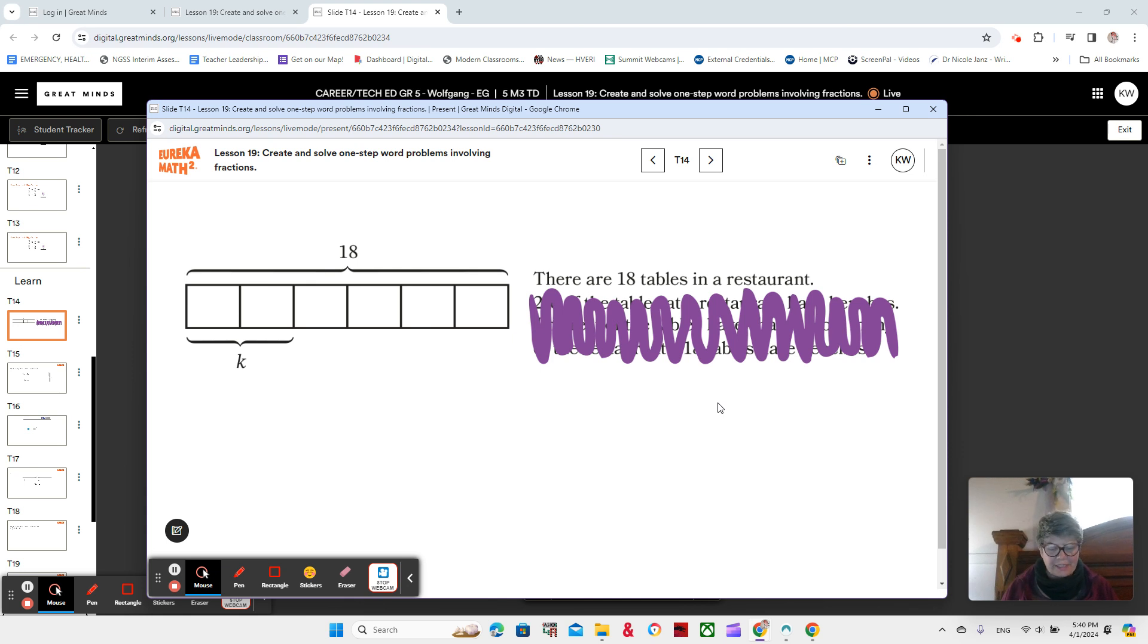What information is shown in the tape diagram that might help Eddie determine what is hidden underneath this scribble? The top sentence says, there are 18 tables in a restaurant.